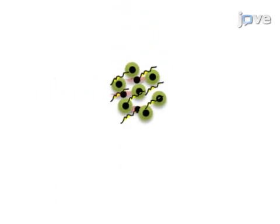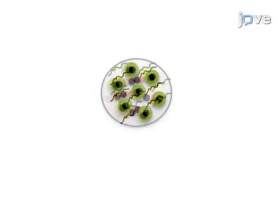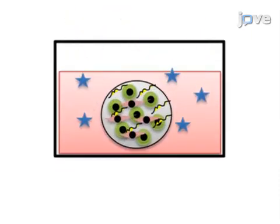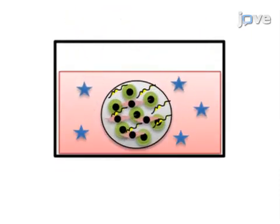As a second step, 3D spheroids with the transfected cells, mesenchymal cells, and extracellular matrix are generated, which allows for large-scale screening of anti-cancer drugs in a complex 3D in vitro environment.